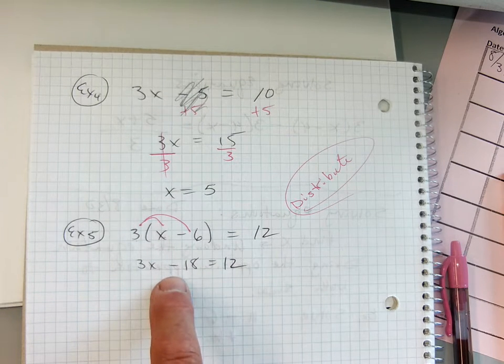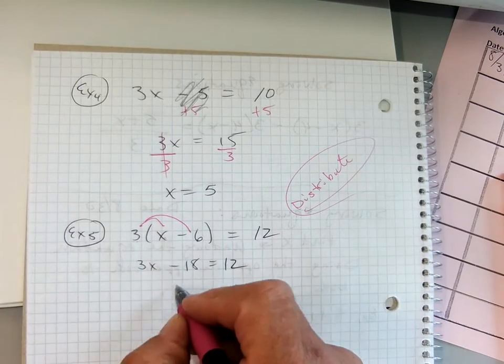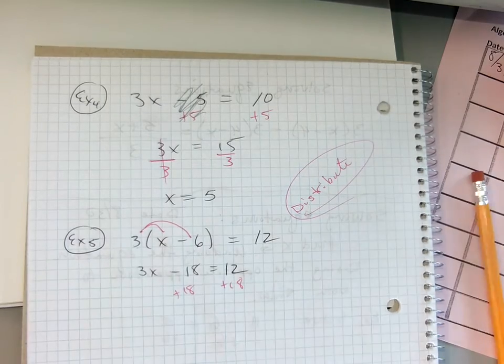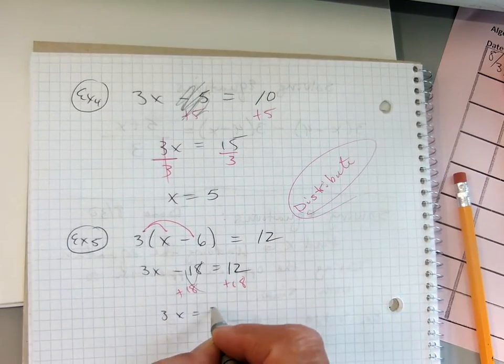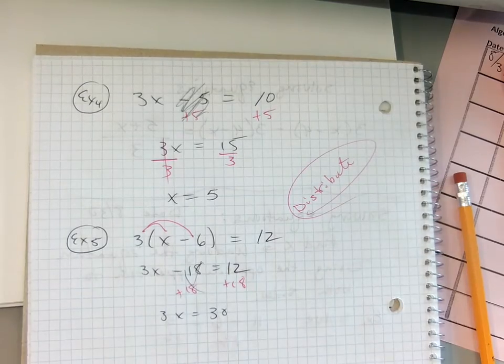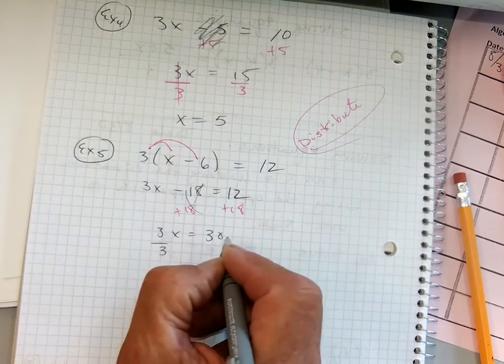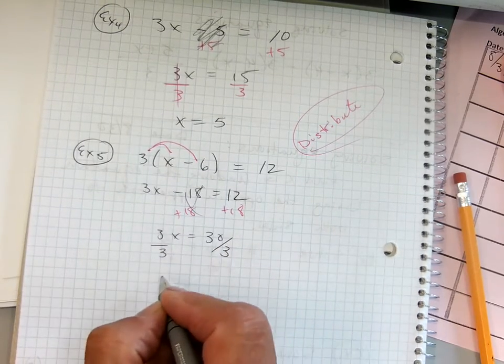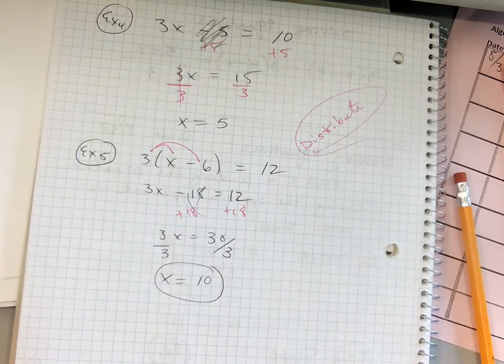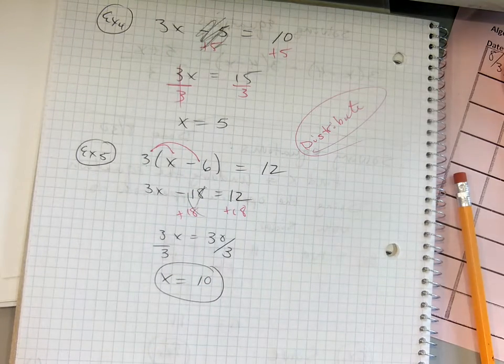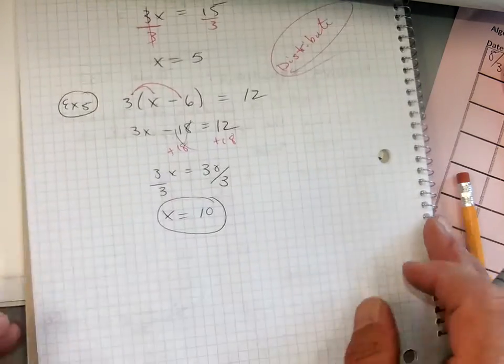So, now, plus 18, right? Opposite. Do the opposite. So, I'm going to go plus 18, plus 18. That cancels that. 3x equals 30. 3x means 3 times x, right? Divide by 3, divide by 3, x equals 10. Thumbs up if you got that one before I did. I want to see how many kids got that way before me. Awesome. Good. I'm hoping this is just a review.